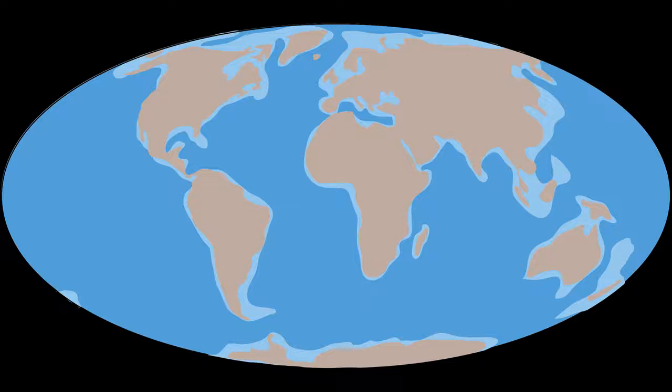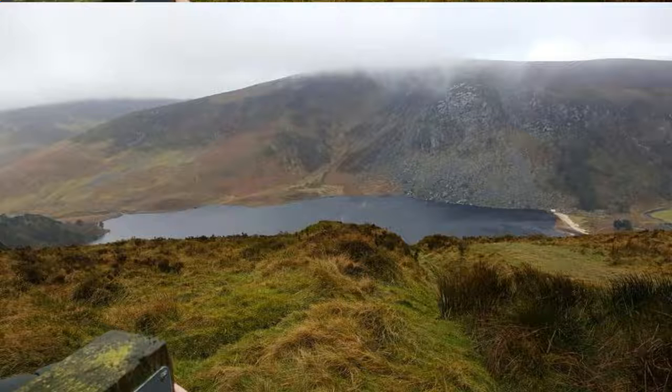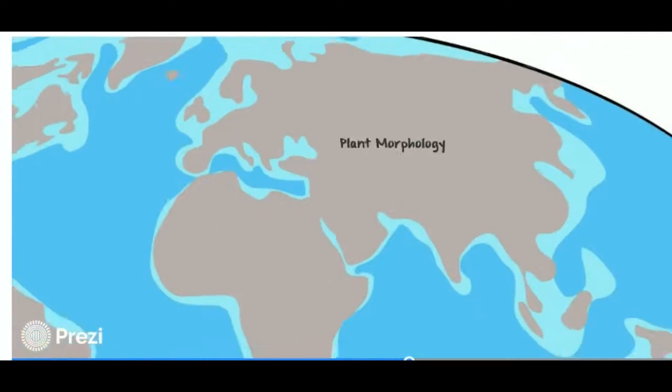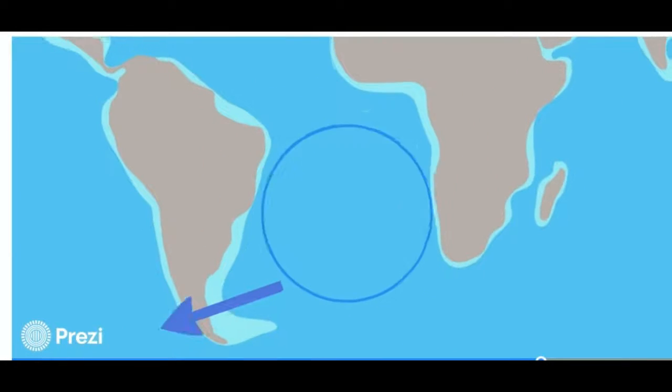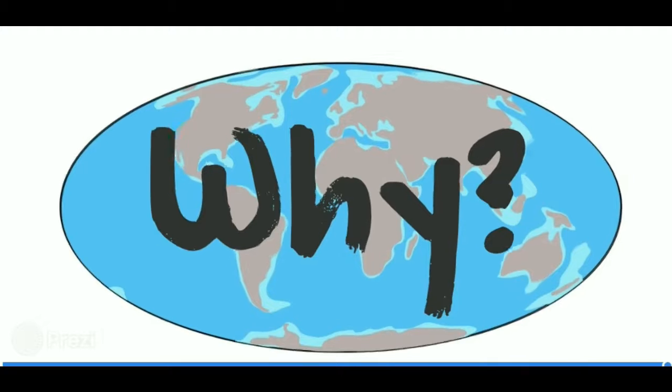The conquering of land by plants was one of the most significant evolutionary events in the history of the planet. However, the Earth was not always the ecological haven we see today. A number of major changes had to occur to the Earth's environment and to early plant morphology in order for their survival to be successful outside of an aquatic environment. In this short film we will examine the changes that occurred in order for terrestrialization to happen.